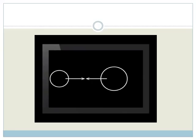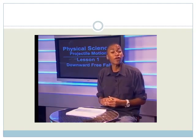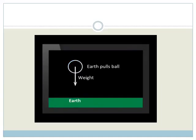Any two objects attract one another by gravitational force because they have mass. The ball and the Earth are two objects with mass, so they attract one another by gravitational force. It's funny to think that the ball pulls the Earth — it does so just as strongly as the Earth pulls the ball. For now, we will focus on the force called weight.